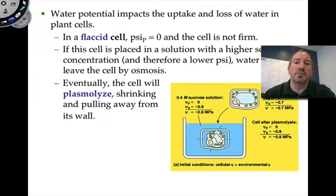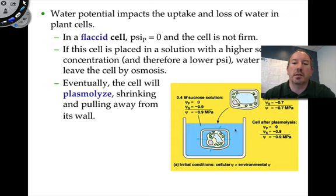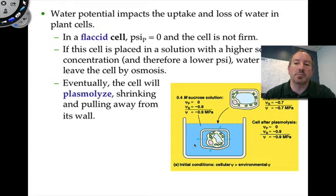When a cell is flaccid, it's not very firm. If a cell is placed in a high concentration of water, water will go in. But if it's put in a very sugary concentration — like a 0.4 molar sucrose solution — the water is going to leave. As a result of water leaving, going from high water potential to low water potential, the cell membrane is actually peeling away from the cell wall, and it's going to lose pressure. We call that plasmolysis.